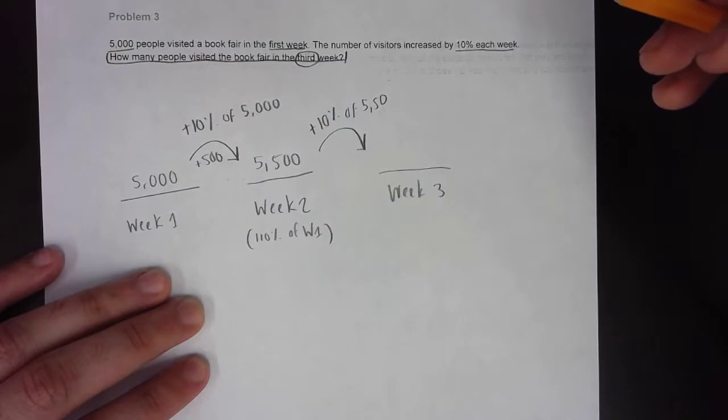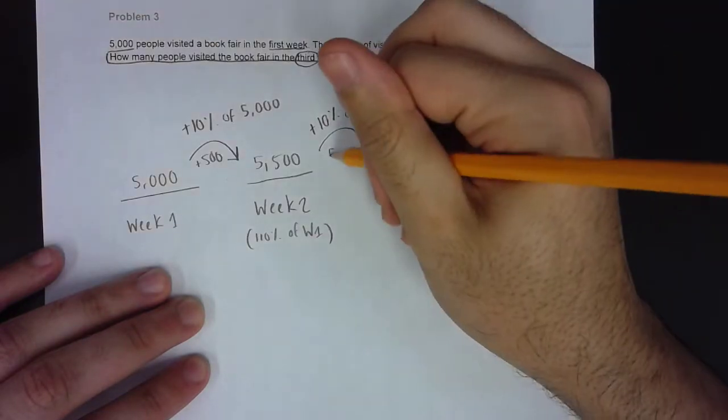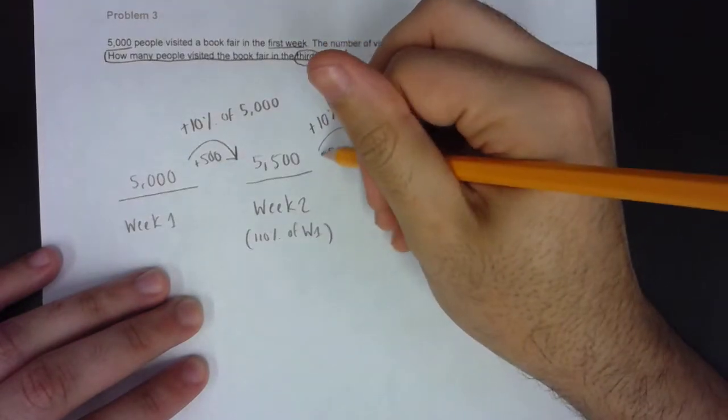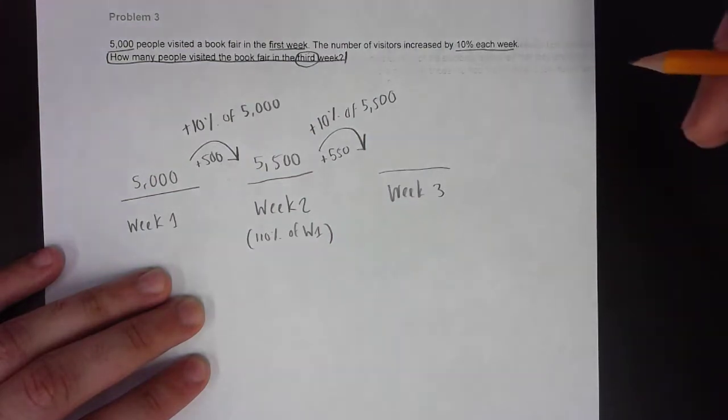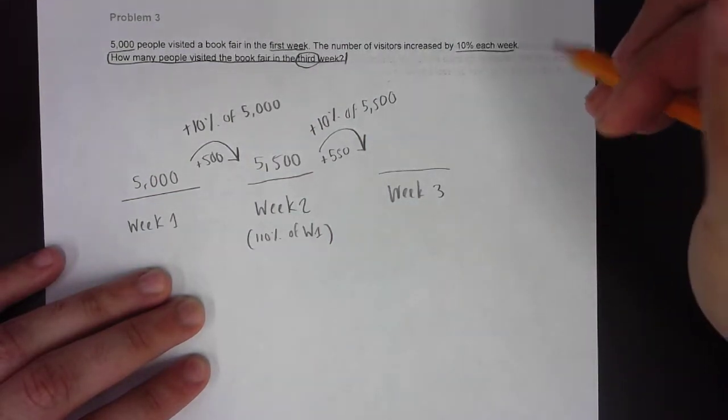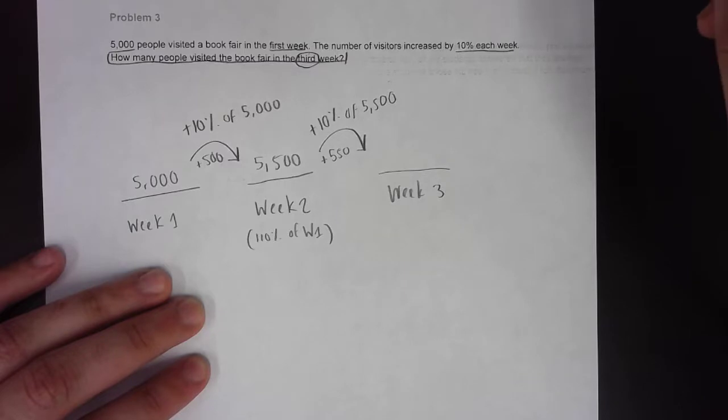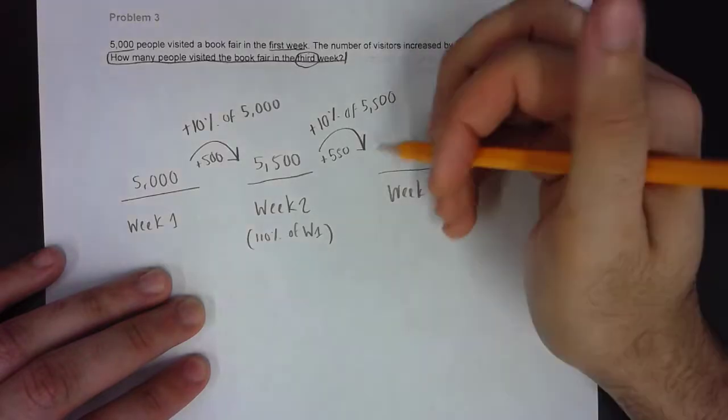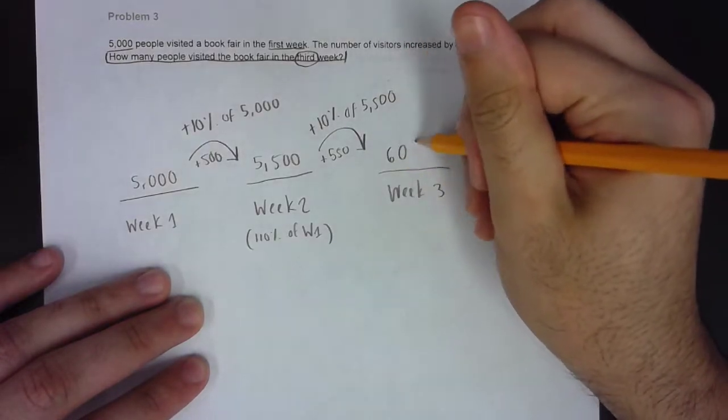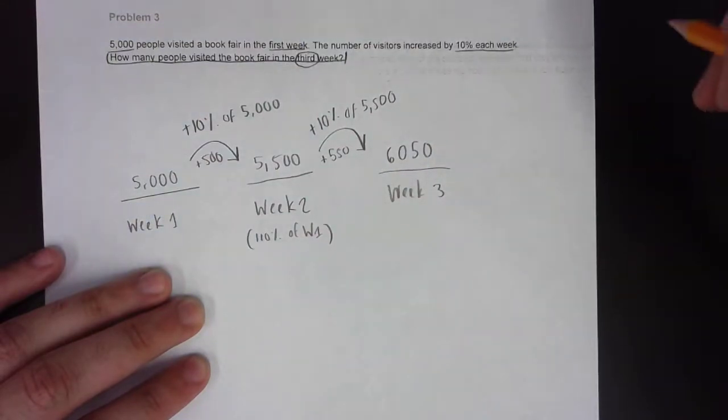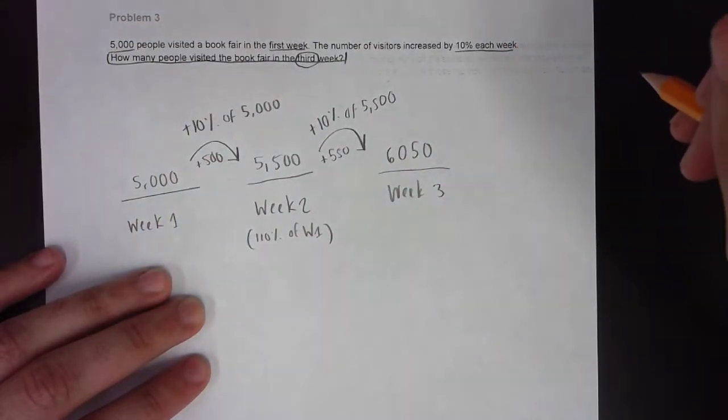When you find 10% of 5,500, you get to 550. That is how many more visitors are visiting in week three compared to week two. When you add 5,500 to 550, you get to 6,050. That is how many people visited the fair in the third week.